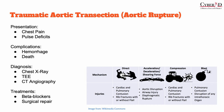Traumatic aortic transection can be seen on transesophageal echo, but the diagnosis must be confirmed with angiography or aortography. Treatment involves blood pressure control with beta blockers and surgical repair. These patients can bleed out very quickly, making death the major complication. If there are signs of anterior chest wall trauma, myocardial contusion may also be present, which can lead to cardiac conduction abnormalities and ventricular arrhythmias, as the right ventricle sits very close to the anterior chest wall.